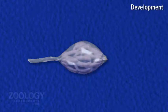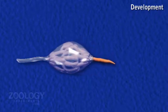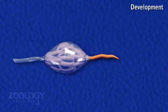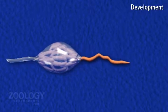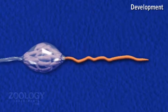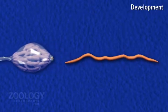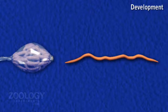The young worm, when fully grown, crawls out of the cocoon in about two or three weeks. The newly hatched young worm receives no parental care and resembles the adult except for size and the absence of the clitellum.